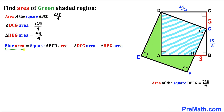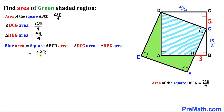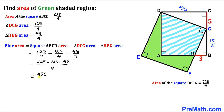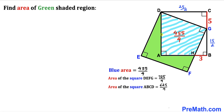Let's calculate the area of the blue region. It equals the area of square ABCD minus the area of triangle DCG minus the area of triangle HBG: 625/4 − 125/4 − 45/4. Simplifying, the area of the blue region turns out to be 455/4 square units.